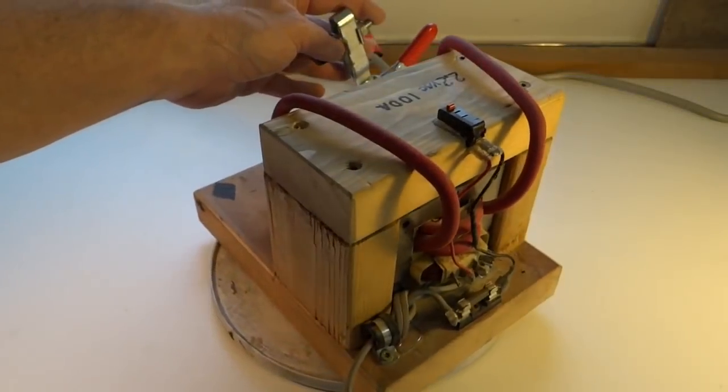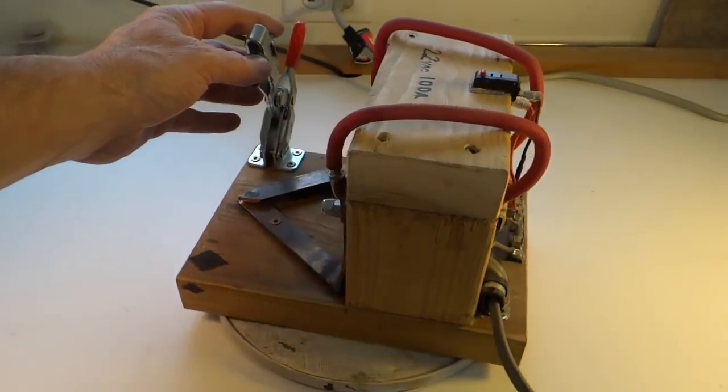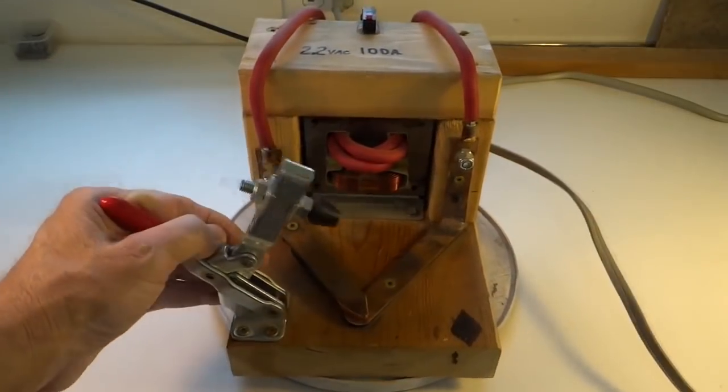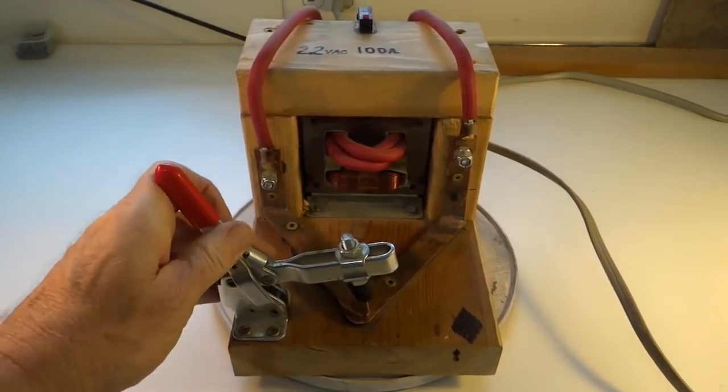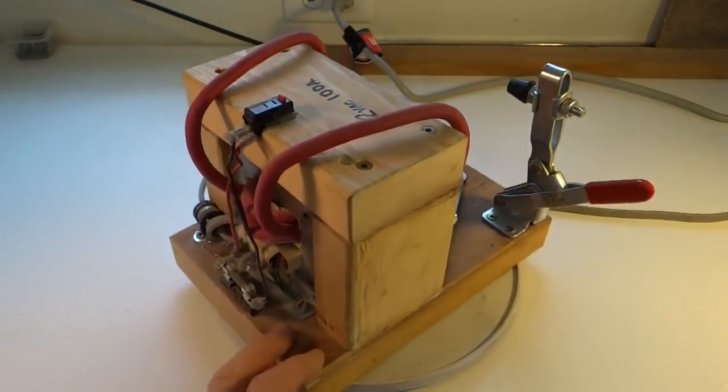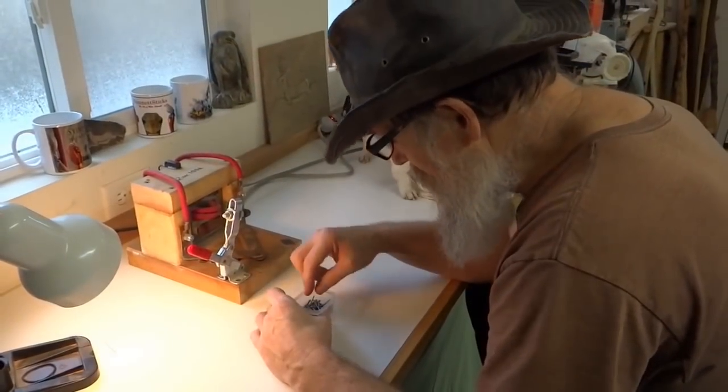This little unit is a homemade spot welder. It was made for me by my friend Earl from Montana. He used the parts of a microwave oven to create it. It works amazingly and allows me to custom make any kind of burning tip I need.